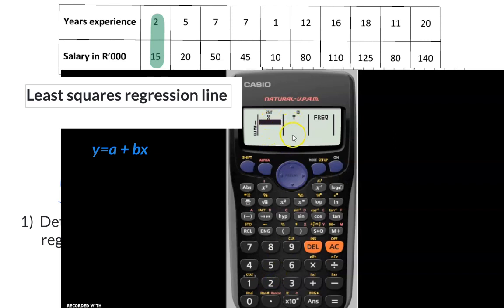Now we have two columns for our two sets of data, and then there might be a frequency column, depending on the setting on your calculator, but for now we don't need that column.